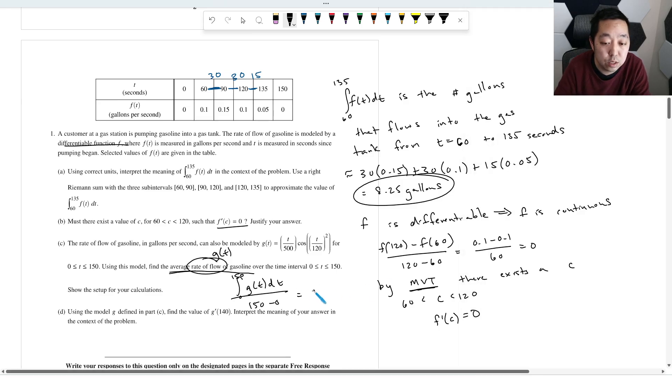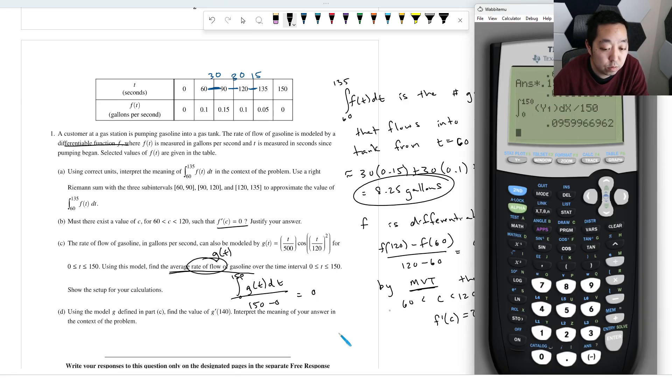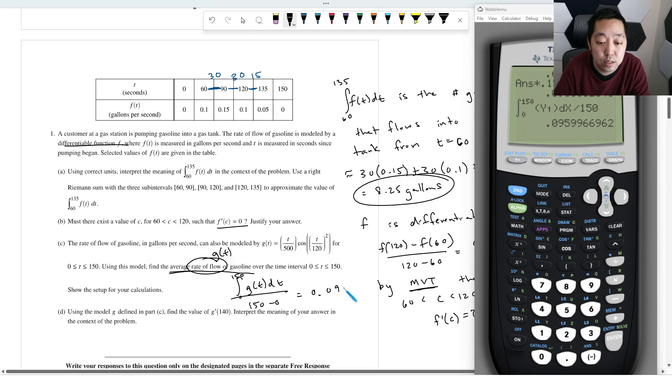So I'm going to get, let's freeze that on the screen, 0.099. And that is in gallons per second.